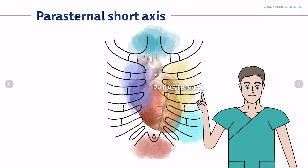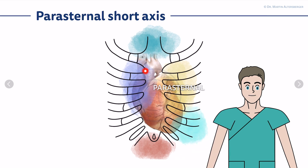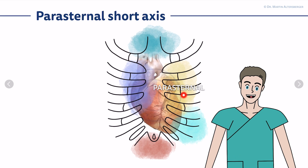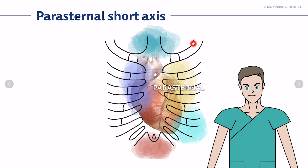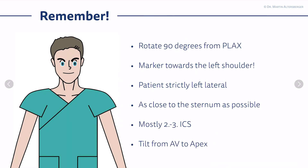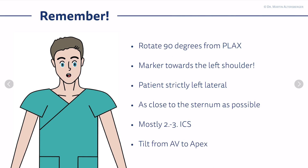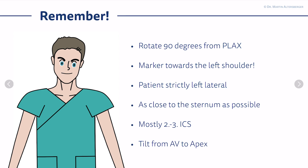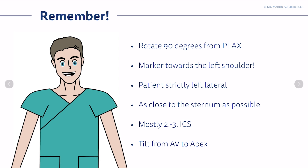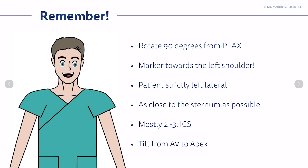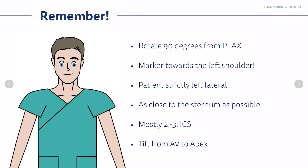Compared to the parasternal long axis view, where the marker points towards the right shoulder, in the parasternal short axis view, the marker points towards the left shoulder. To get to the parasternal short axis view, you start in the parasternal long axis and rotate the transducer 90 degrees clockwise, changing the marker orientation from right shoulder to left shoulder.